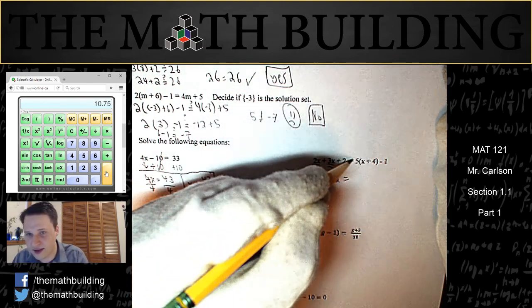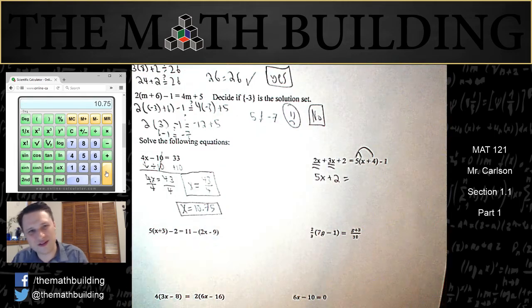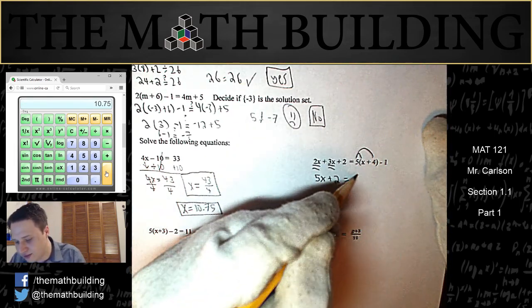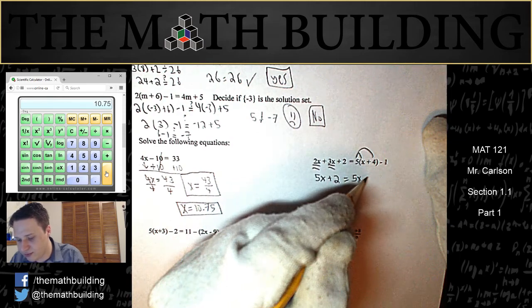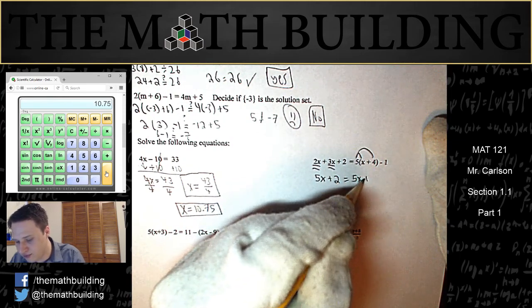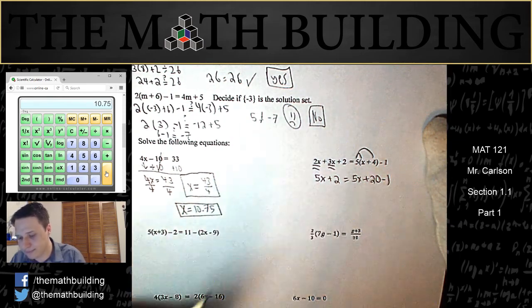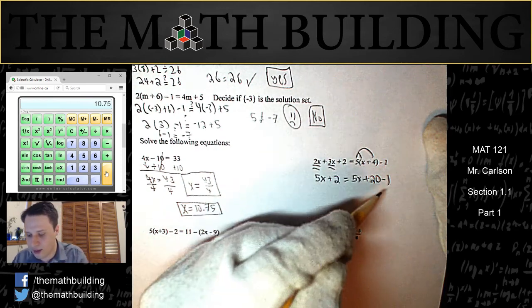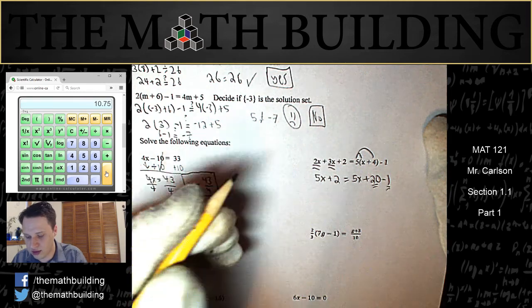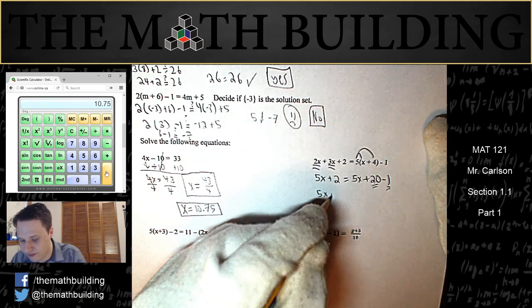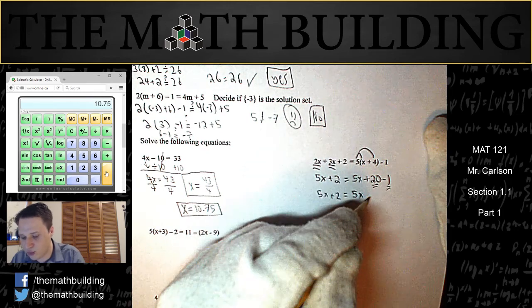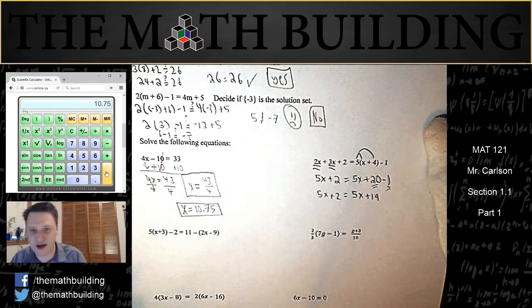On the right hand side, we have 5 outside of some parentheses, so we should use the distributive property, which hopefully you are familiar with. 5 times x is 5x. 5 times 4 is equal to 20. So I get 5x plus 20 minus 1. Now I can simplify this side of the equation. The left side I'll keep the same, 5x plus 2 is equal to—on the right hand side, 20 minus 1 is 19. So I have 5x plus 19.